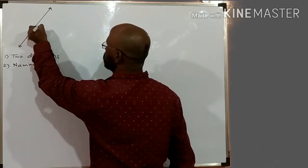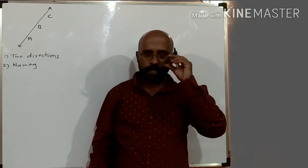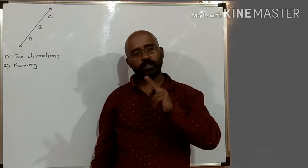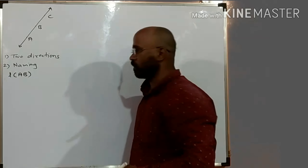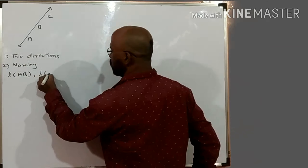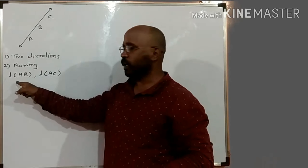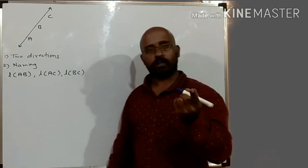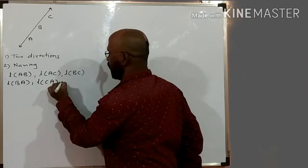Suppose, students, there are three points on this line: point A, point B, and point C. How will you name it? For naming of a line, we have to write any two points on the line in any order. For example, you can write the name of this line as line AB. Or I can take another two points like line AC. So to write the name of a line, you can take any two points — line AB, line AC, line BC — in any order. You can also write in reverse order: line BA, line CA, and line CB.